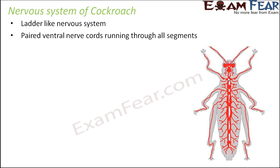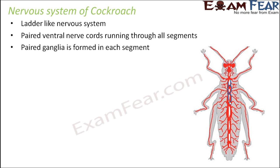They have paired ventral nerve cords running through all the segments. Here you can see these red colored nerve cords — one pair and another pair — running throughout the body. Paired ganglia are formed in each segment.